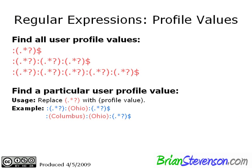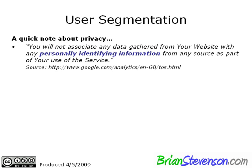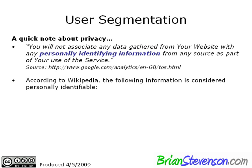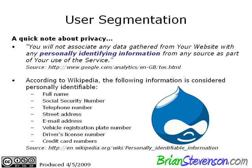Let's look at some privacy concerns when using the user segmentation feature. Google has written into their terms of service that you will not use any personally identifying information with your use of this service. According to Wikipedia, personally identifiable information includes a wide range of data that could link someone back to an actual person. Be careful that when you populate your profile values, you don't select profile values that may contain private information — please be responsible and don't put any personally identifiable information into your user segmentation variable.